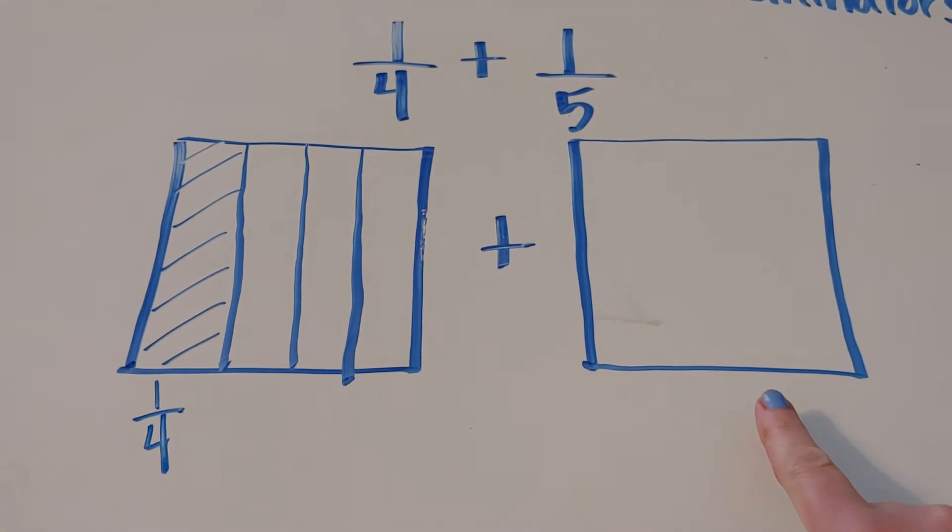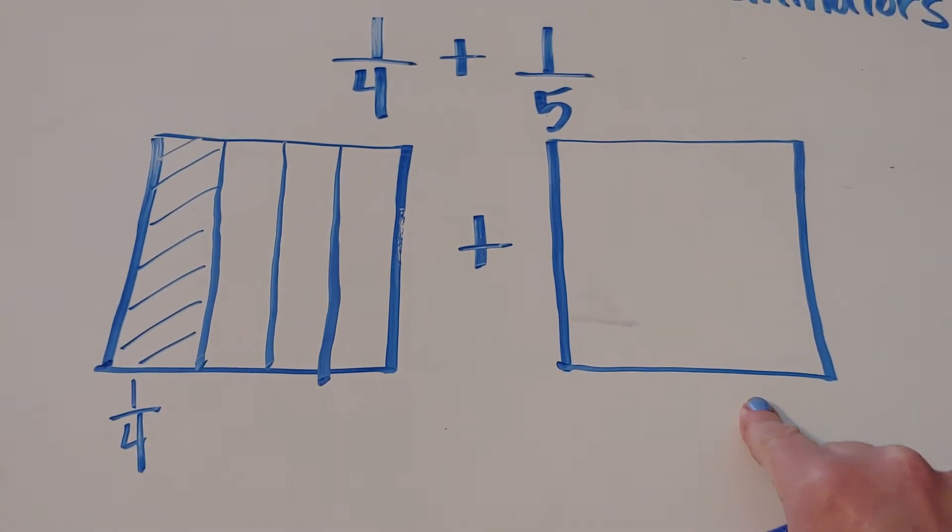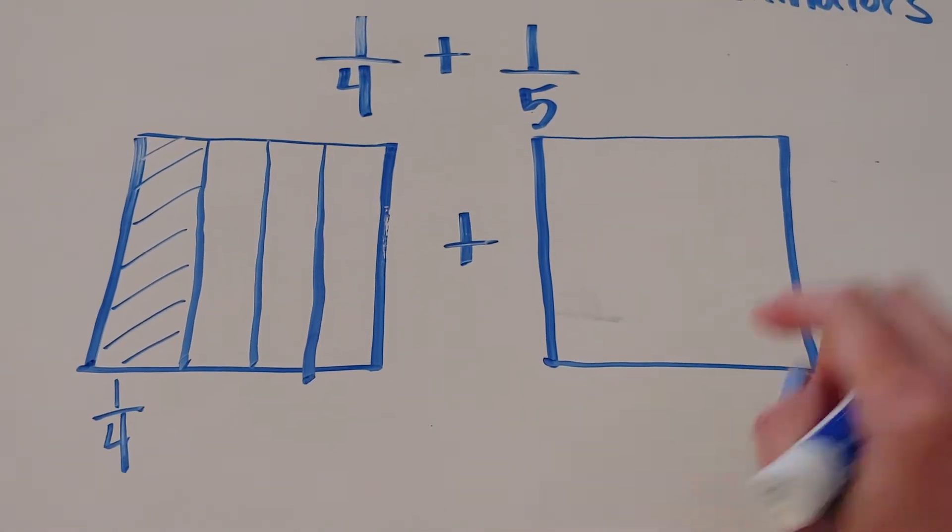Okay, now we want to add it to one-fifth. Now we're going to cut this into five slices but we're going to do this one horizontally.